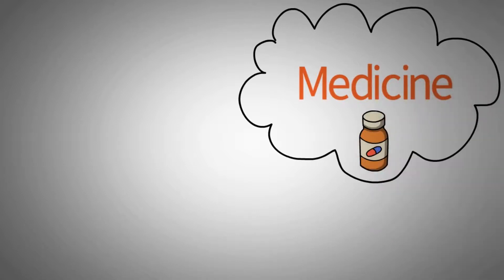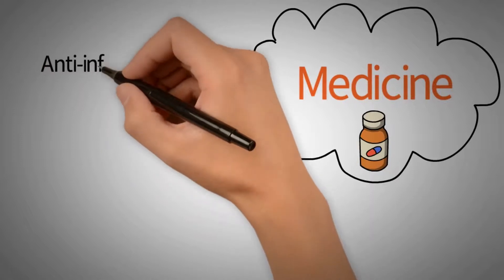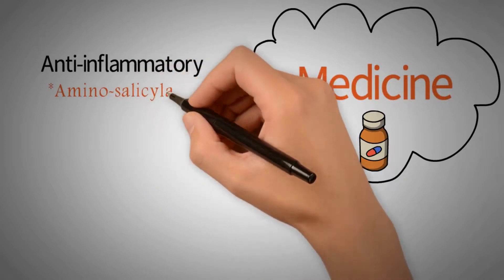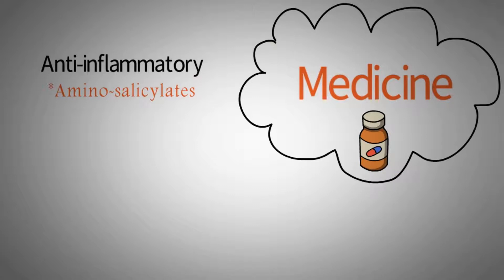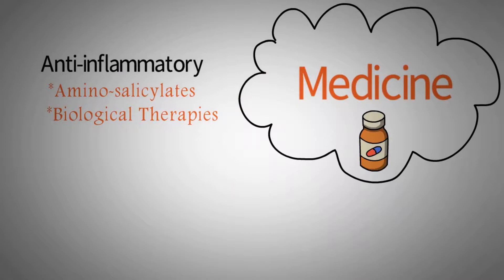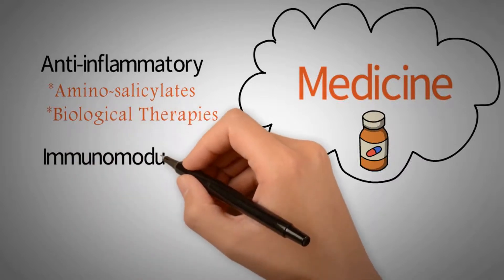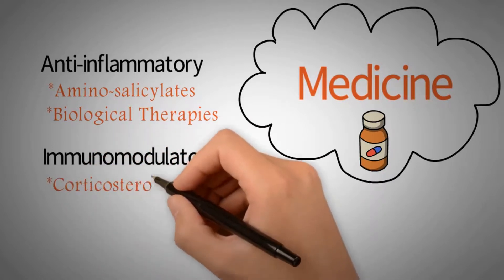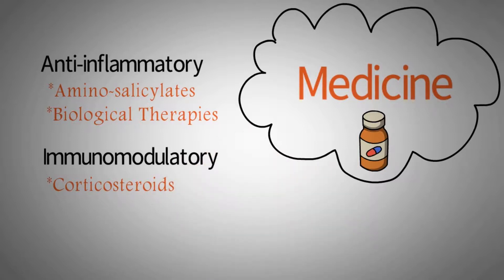Your doctor may give you medicines to control inflammation, such as amino salicylates, which may also help prevent flare-ups. Most people with mild to moderate ulcerative colitis and some people with Crohn's disease are treated with amino salicylates. Biological therapies block substances in your body that cause inflammation. Antibiotics may help if you have an infection or overgrowth of bacteria. Corticosteroids are strong, fast-acting drugs used to treat IBD flare-ups, taken for short periods of time only.